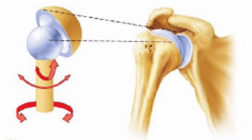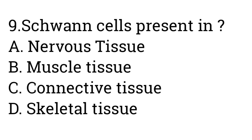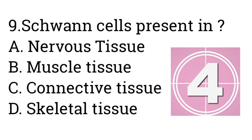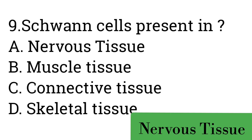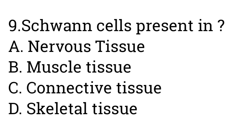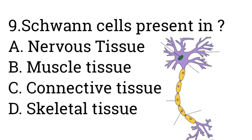Question number nine: Schwann cells are present in which option? A: Nervous tissue, B: Muscle tissue, C: Connective tissue, D: Skeletal tissue. Answer is Nervous tissue. Schwann cells are the main glial cells of the peripheral nervous system and help in the development, maintenance, and function of peripheral nerves.